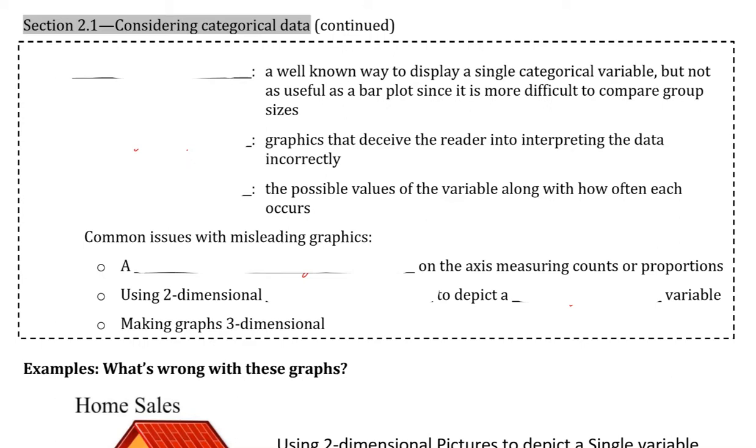We discussed before that bar plots are a common way of representing categorical data, but another common display sometimes used is a pie chart, a well-known way to display a single categorical variable, but is not as useful as a bar plot since it is more difficult to compare sizes.